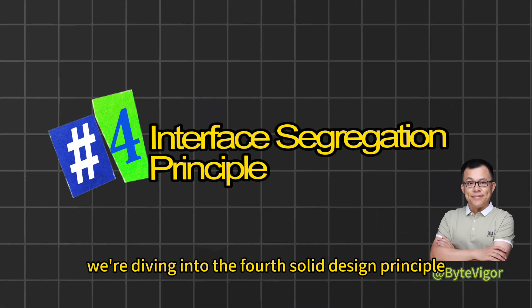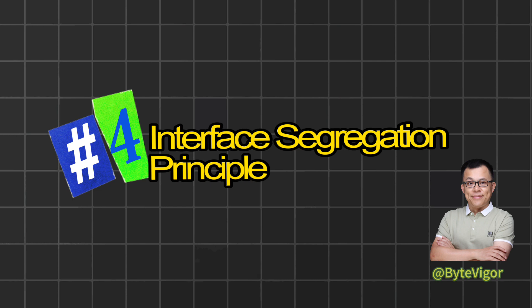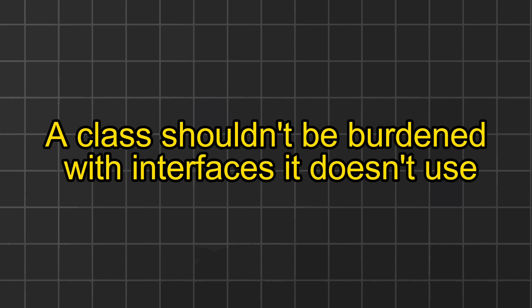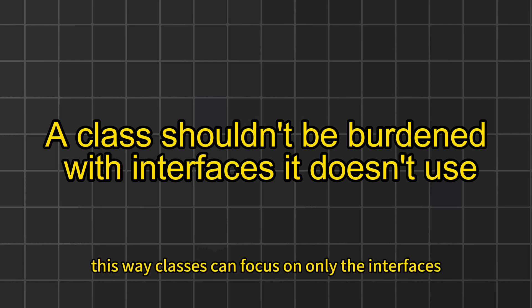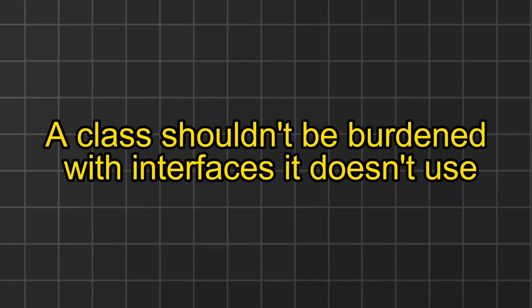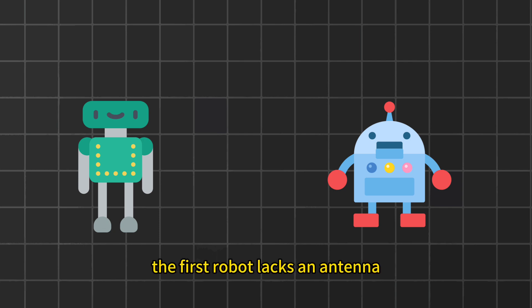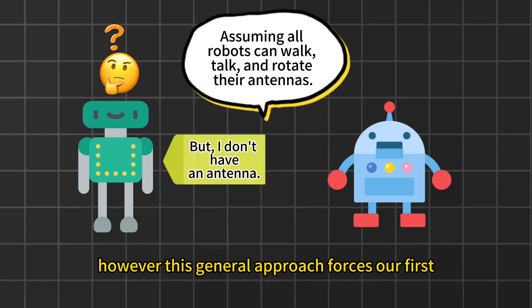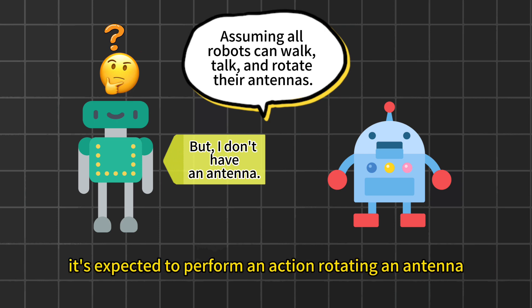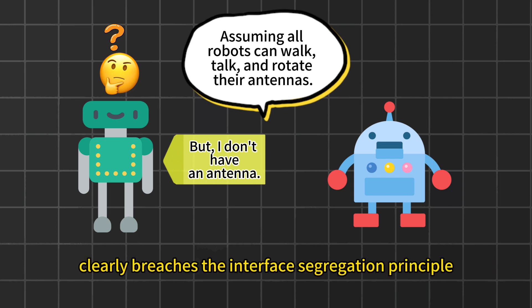Next, we're diving into the fourth SOLID design principle, the Interface Segregation Principle. This principle stresses that a class shouldn't be burdened with interfaces it doesn't use — a class should only implement the methods it truly needs. This approach breaks down bulky interfaces into smaller, more specific ones, so classes can focus on only the interfaces relevant to them. Originally, our design mandated that all robots, regardless of their design, should be able to walk, talk, and rotate an antenna. However, this forces our first robot — which lacks an antenna — to perform an action it physically can't, clearly breaching the Interface Segregation Principle.